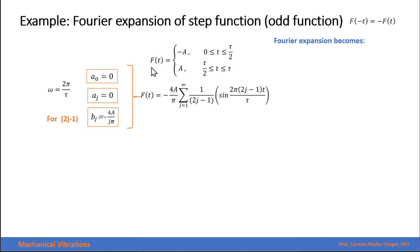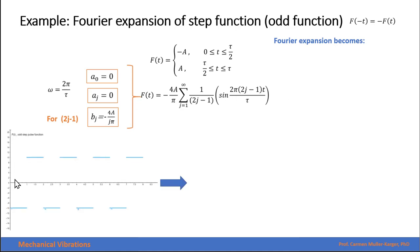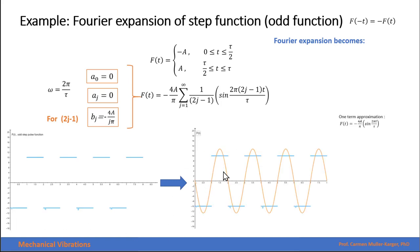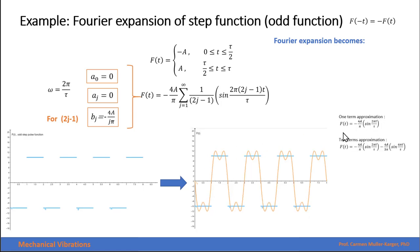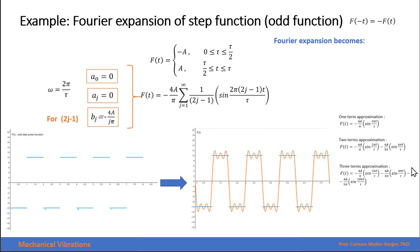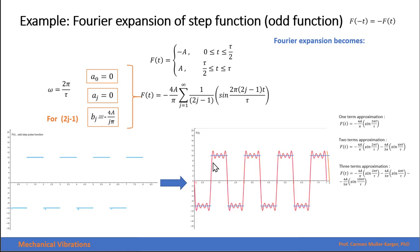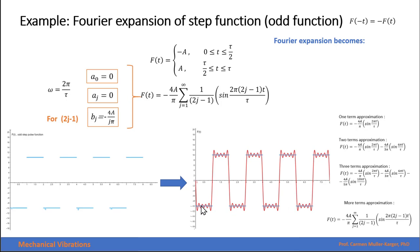So finally, the piecewise function can be expressed as a summation of sine functions. Graphically, with one term it is a rough harmonic approximation. Adding a second term gives a better approximation, and a third term brings it closer still. However, the discontinuities will always carry some error, and increasing the number of terms improves the overall fit everywhere except at the discontinuities.